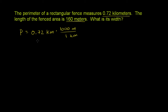You might ask: how do you know to multiply by 1,000 instead of divide by 1,000? One way to think about it — and this is probably the best way — is just look: a kilometer is a bunch of meters; it's actually 1,000 meters. So if I'm converting kilometers into meters, I should have a much larger number. That's what tells you to multiply.